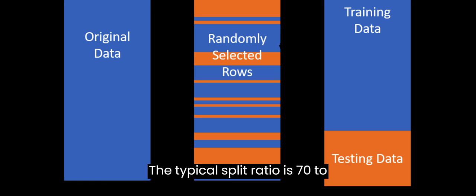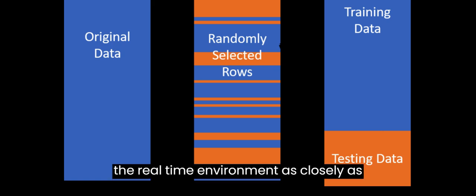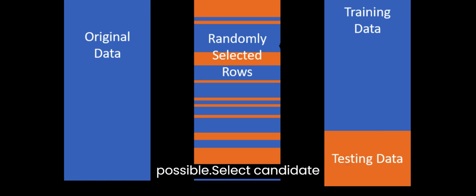The typical split ratio is 70 to 80% for training, 10 to 15% for validation, and 10 to 15% for testing. In real-time scenarios, ensure that the test set includes data that represents the real-time environment as closely as possible.